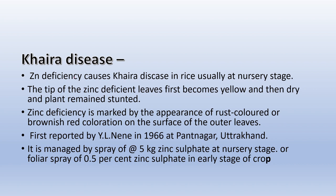An important disease of rice is Khaira disease, caused due to deficiency of zinc at nursery stages. The tips of zinc-deficient leaves first become yellow and then dry, and the plant remains stunted. This disease is marked by the appearance of rust-colored or brownish-red coloration on the surface of outer leaves. It was first reported by Y.L. Nene in 1966 at Pantnagar, Uttarakhand.